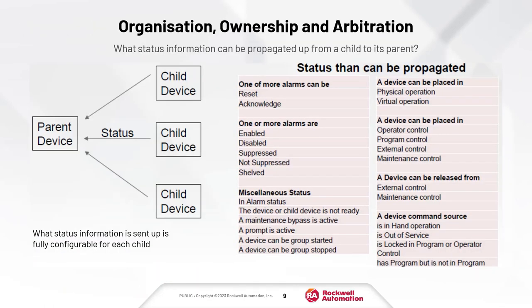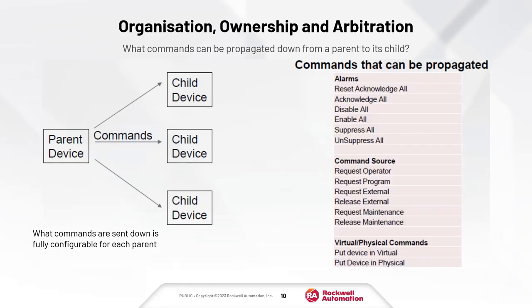What status information can be propagated using Organization, Ownership and Arbitration? You can see a list of all the things that can be propagated, but a key point is that it's highly configurable - at each level you have full control about what information is propagated up to the level above it. Similarly, for commands propagated down from a parent, you have full control about what is propagated from a parent down to a child at every level.